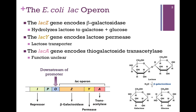The LAC-Z gene encodes beta-galactosidase, the enzyme that hydrolyzes lactose to produce galactose and glucose, which can then be metabolized for energy. Lactose is a beta-1,4 linkage of galactose and glucose, hence the name beta-galactosidase. The LAC-Y gene encodes lactose permease, which is a kind of lactose transporter that brings lactose within the cell so that it can be processed by beta-galactosidase.